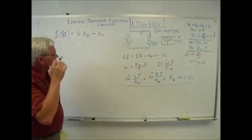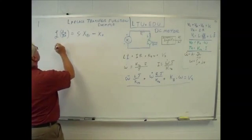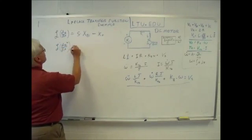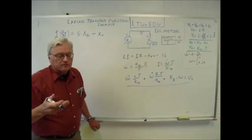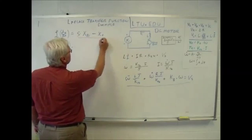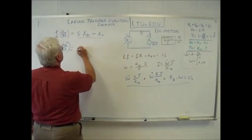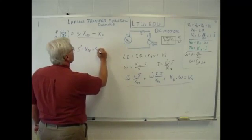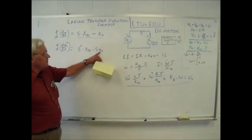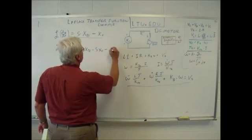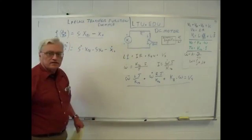Given that, for the second derivative: the Laplace transform of d²x/dt² — if the first derivative is multiplying by s, the second derivative multiplies by s again. So we get s² times X(s) minus s times x(0) — the initial value of x in the time domain at time equals zero — minus x-dot of zero. So you also get the initial velocity term.